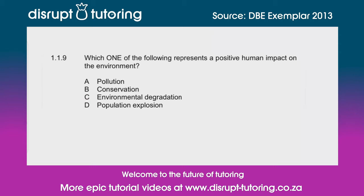Option A: pollution. The impact that humans have with pollution — well, humans can get rid of waste, and if they dispose of their waste all over the environment, it's very harmful. So that is not a positive impact — not A.